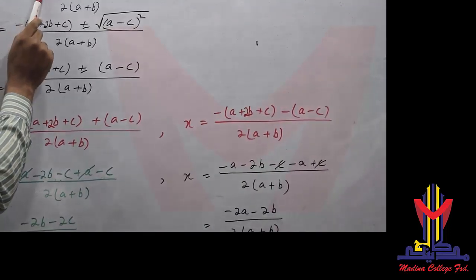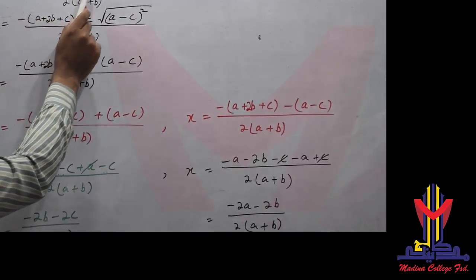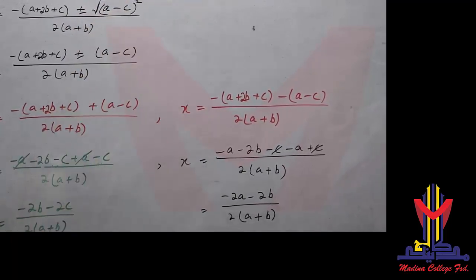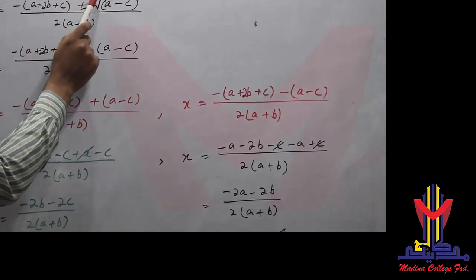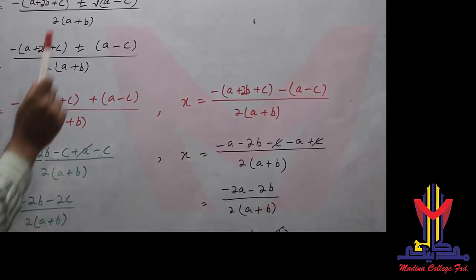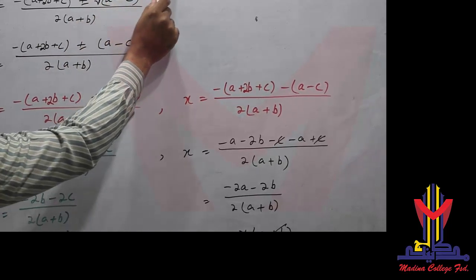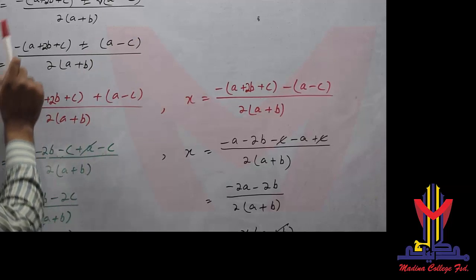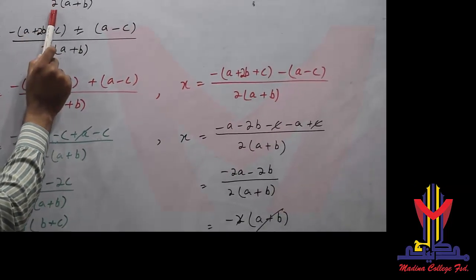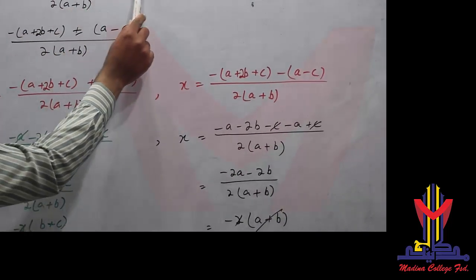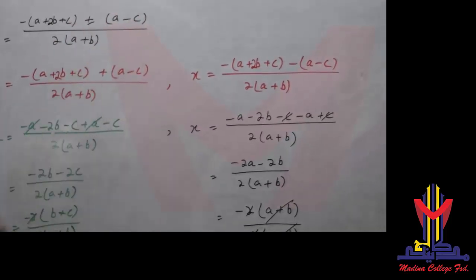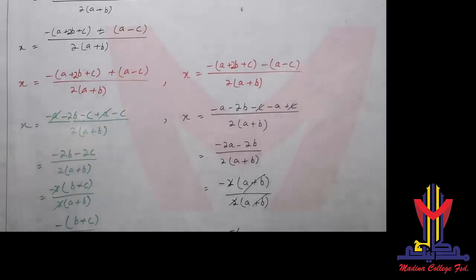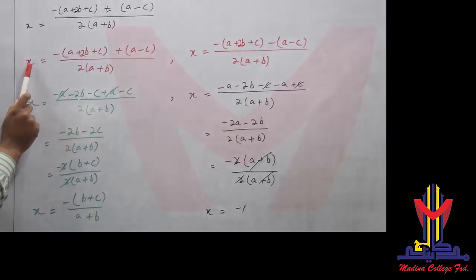After cancellation, we have: x = [-(A+2B+C) ± √(A² + C² - 2AC)] / [2(A+B)]. Now, A² + C² - 2AC is the whole square of (A-C). So the square root cancels, leaving (A-C). We apply ± once as plus and once as minus.